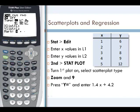It shows our x list is L1 and y list is L2, which matches how we entered our data, so those are both correct.